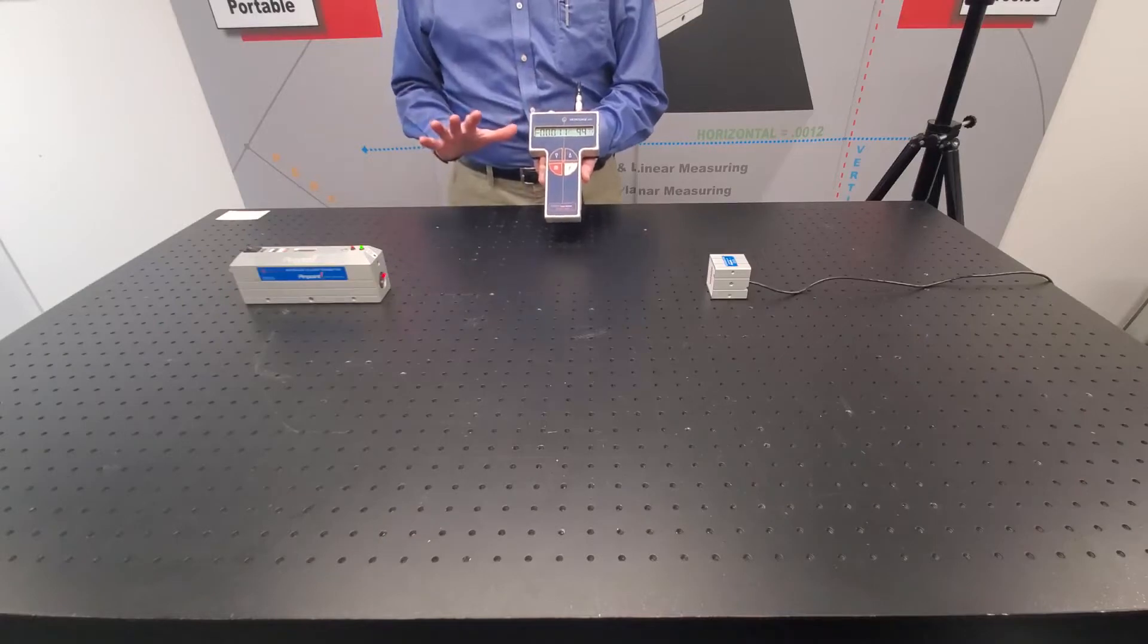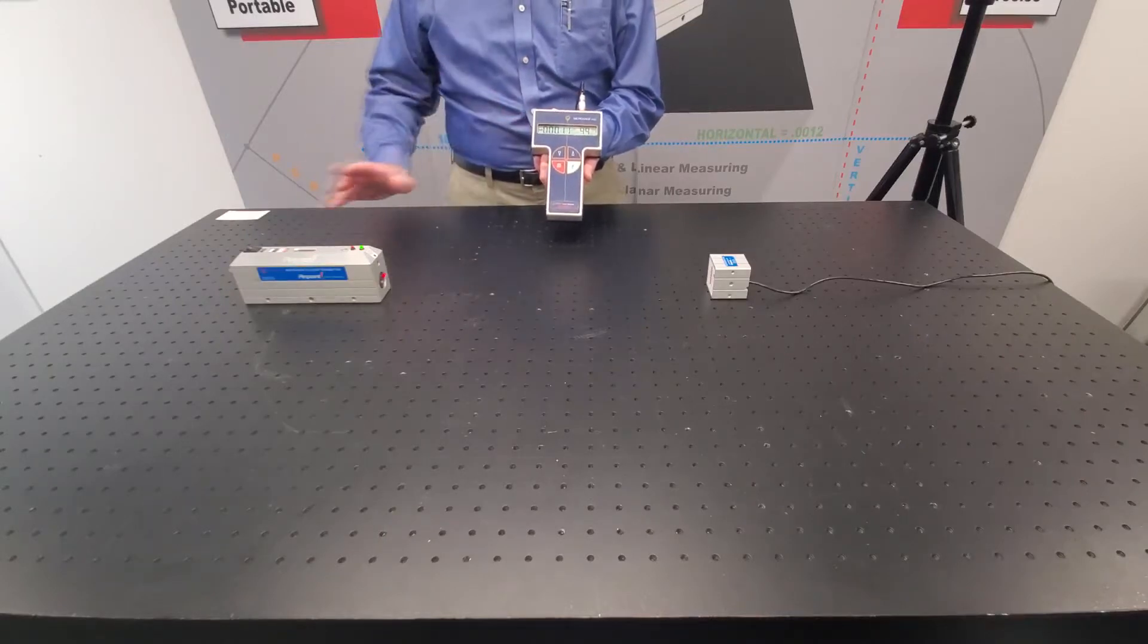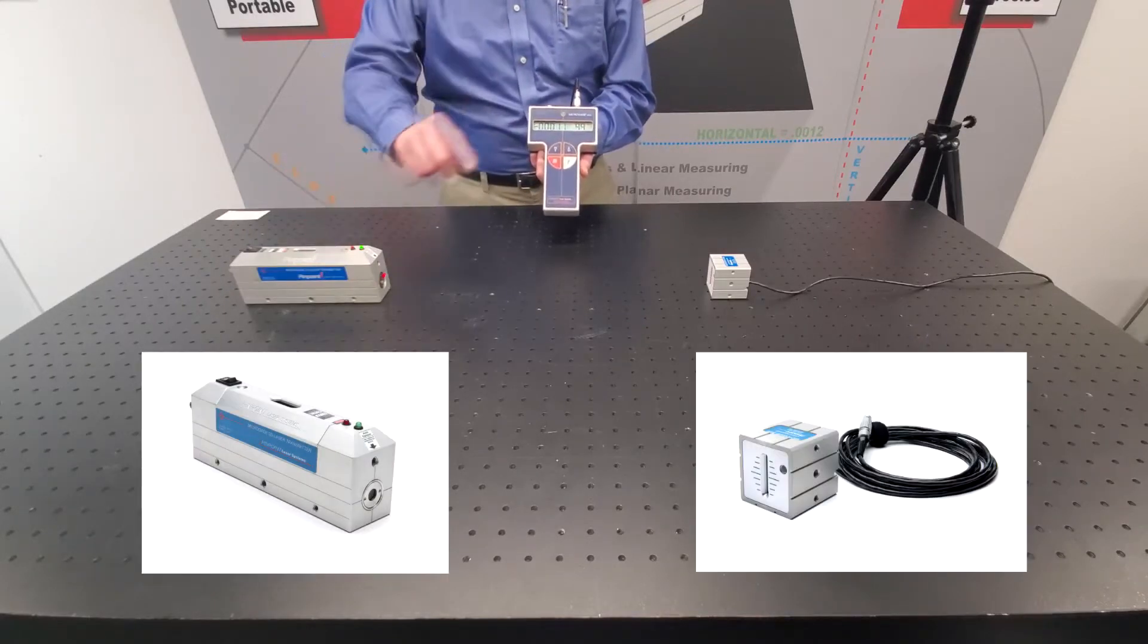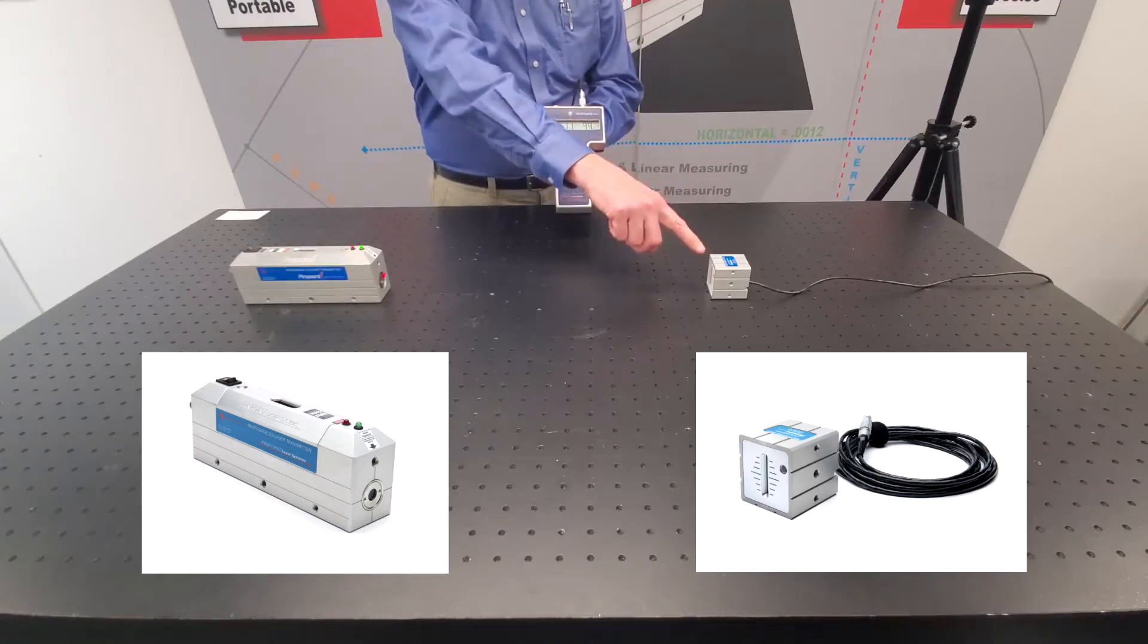The MicroGauge 2000 consists of three components: a laser transmitter, a digital receiver that picks up the laser light, and a display unit.